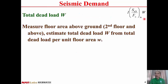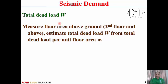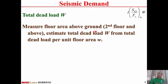Total dead load includes the weight of structural members like beams, columns, slabs, and walls, and anything attached to the building. Since it is very difficult to directly measure the weight of the building, we calculate the total dead load W per unit floor area. Therefore, we just measure the floor area above ground from the second floor to the roof, and estimate the total dead load from the dead load per unit floor area, small w.